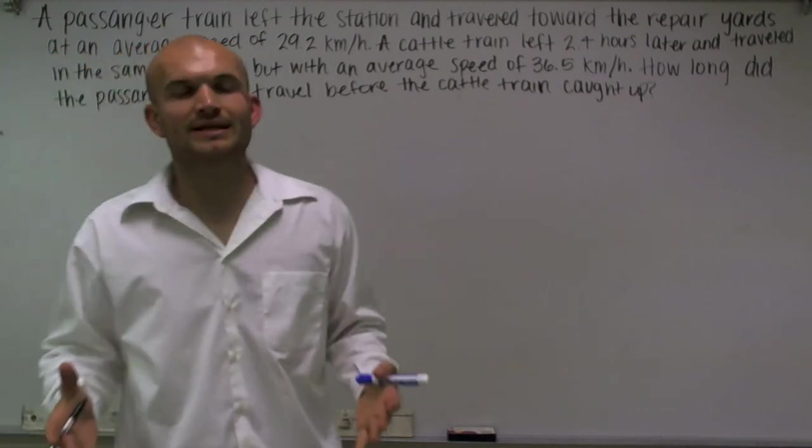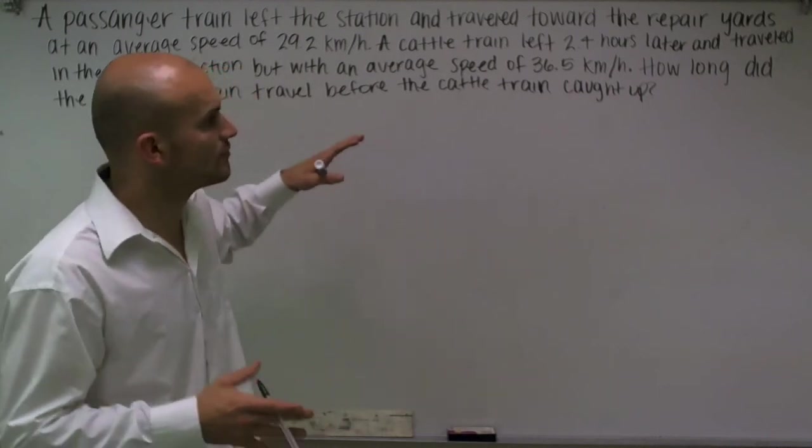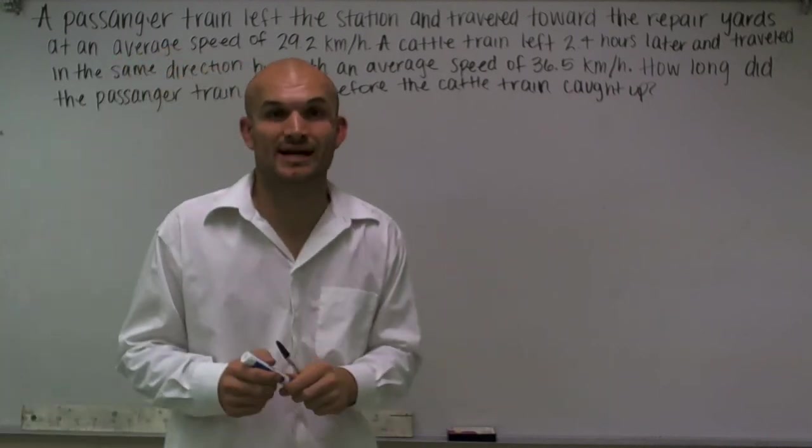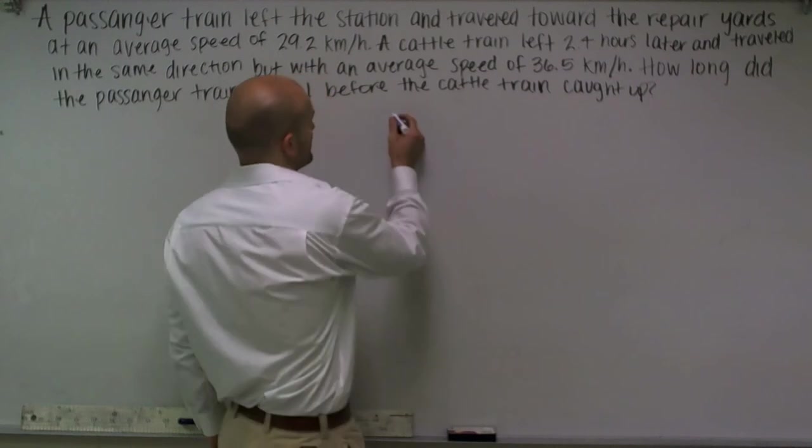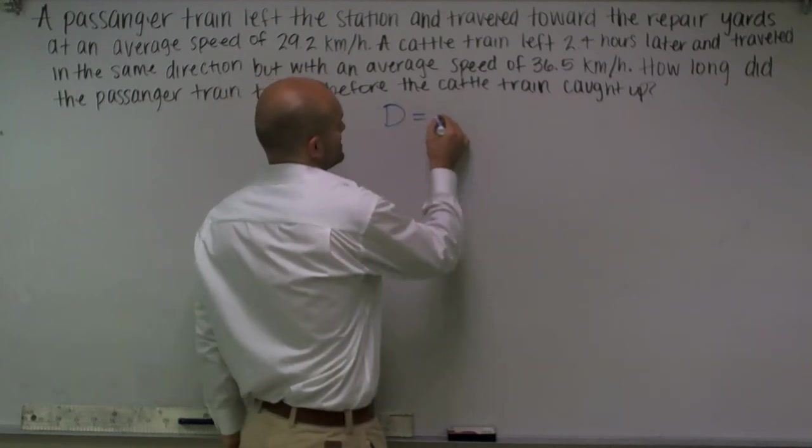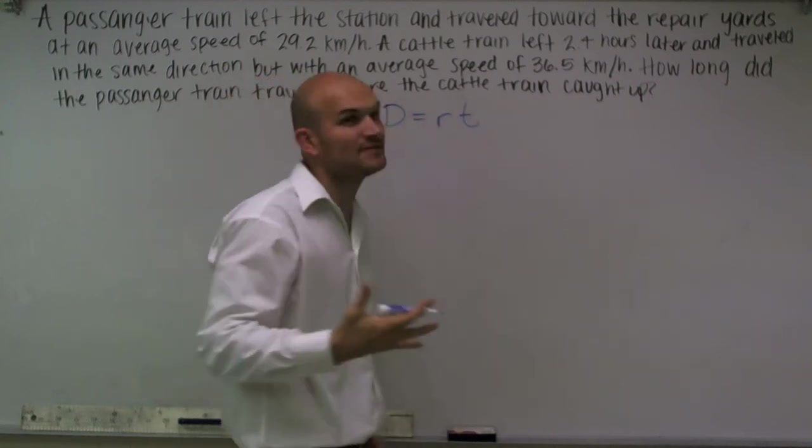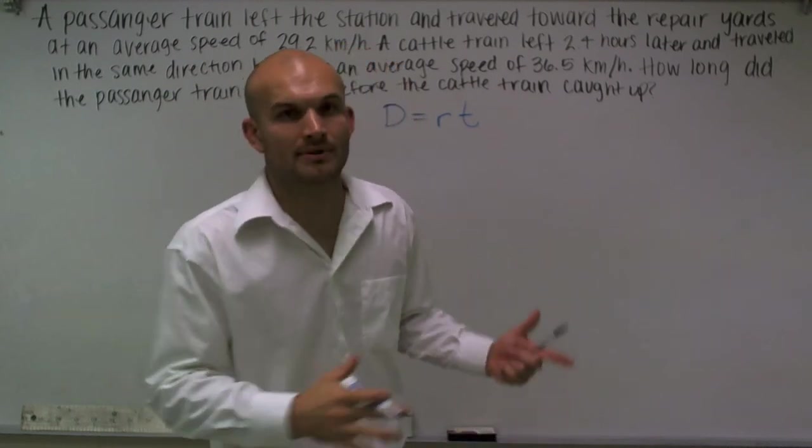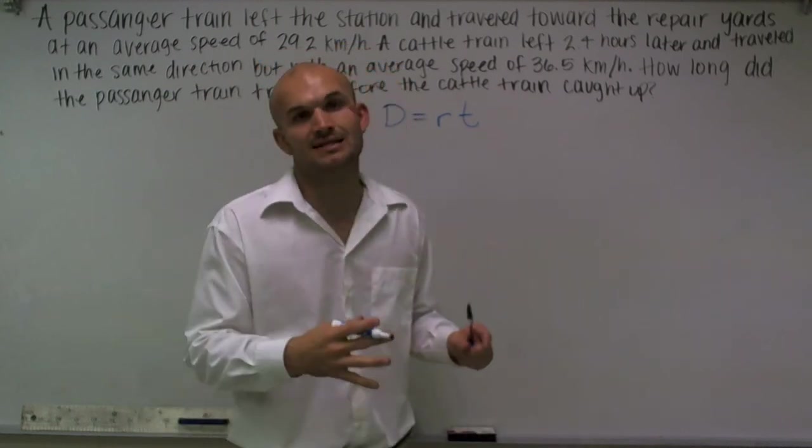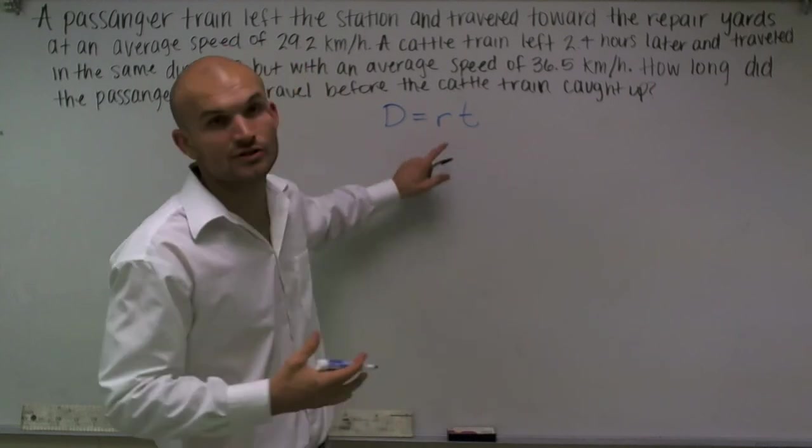So what we need to do here is we first need to know our distance equals rate times time equation, and that equals distance equals rate times time. We have to understand that whenever we do a word problem and we see distance, rate, and time, we need to understand that we have to use this equation.